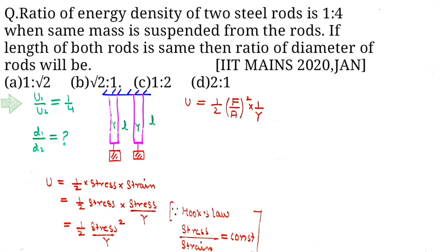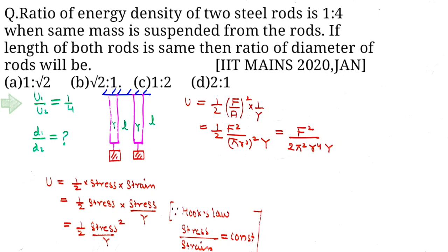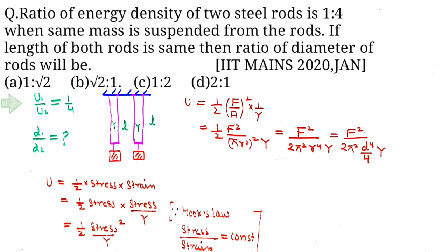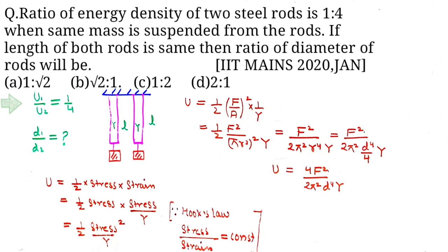Stress is basically force by unit area. After substituting area equals pi r squared, you get u equals half times f squared divided by pi r squared whole squared into Y. Since the radius is diameter by 2, you finally get u equals f squared by 2 pi squared d to the power 4 by 4 into Young's modulus.